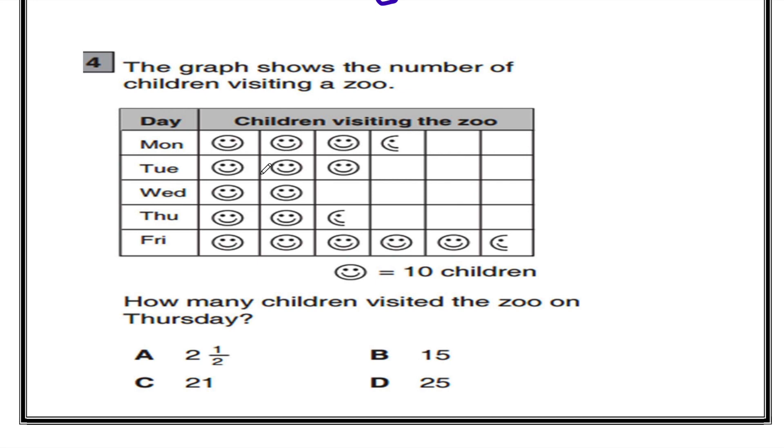On Tuesday, there are 30 students visiting the zoo. On Wednesday, there are 20 students. On Thursday, there are 25 students. And on Friday, there are 55 students. And on Thursday, there are 25 students visiting the zoo. So the answer is 25 students.